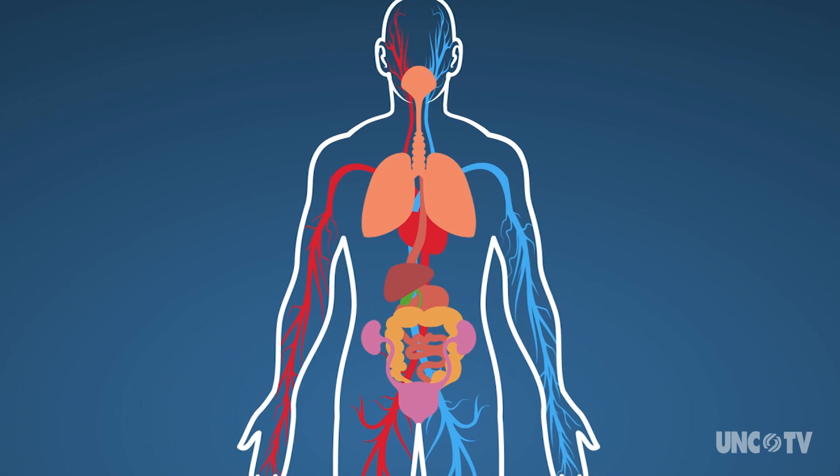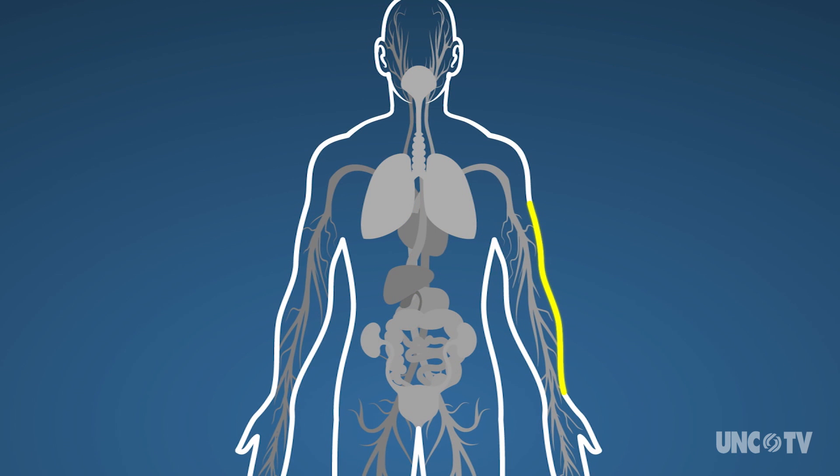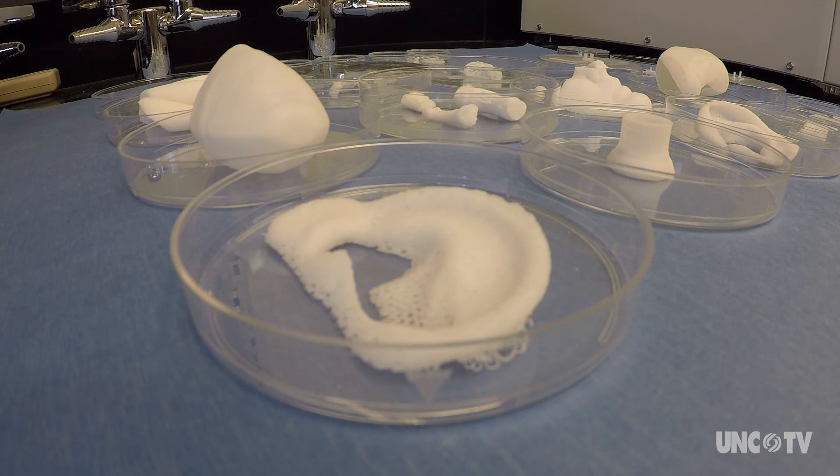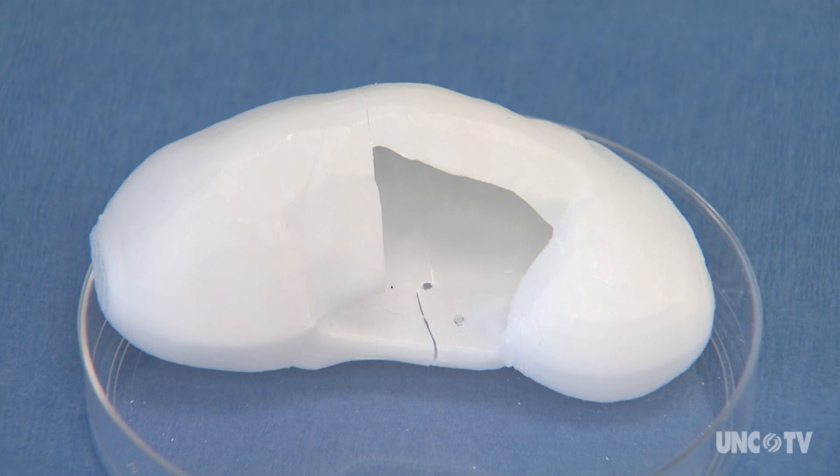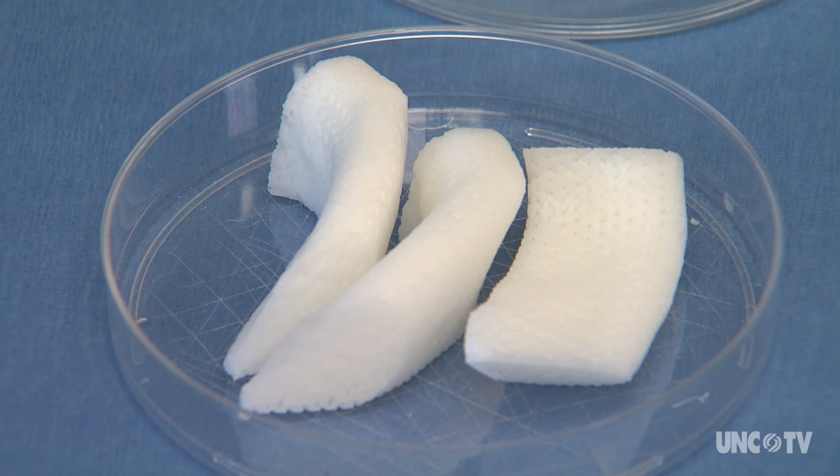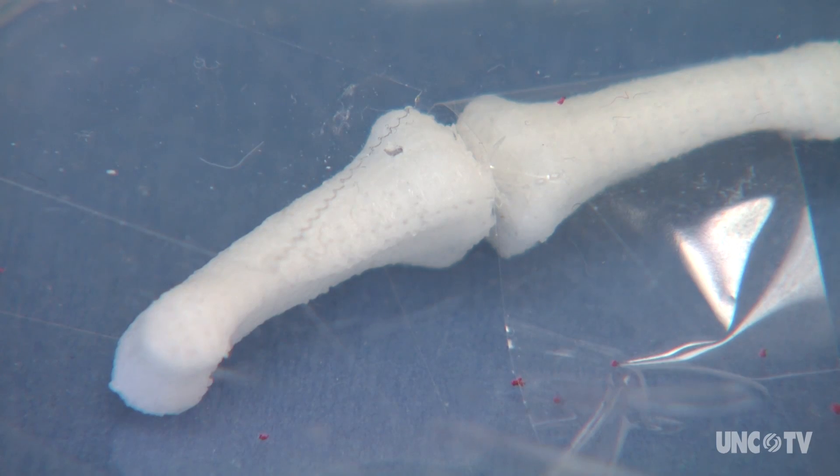So far, the research team has implanted into humans flat structures, such as skin, hollow tubular structures, such as blood vessels and windpipes, and hollow non-tubular organs, such as a bladder and a stomach. But those tissues and organs were handmade in the lab and the customized scaffolds were coated by hand with the patient's cells.